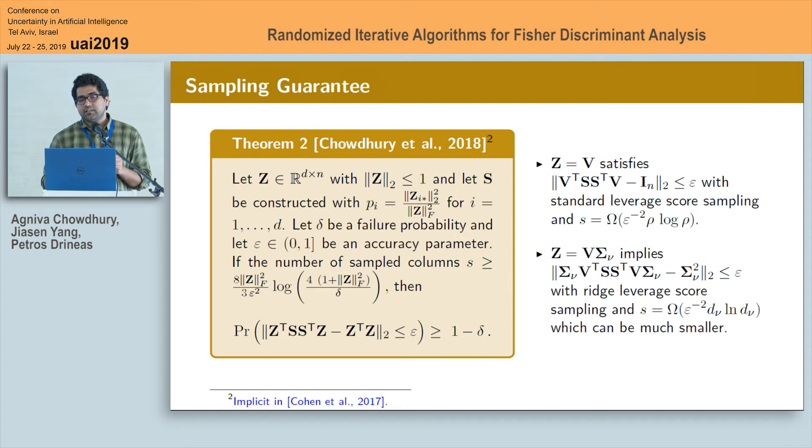In particular if the sampling probabilities are proportional to the column leverage scores of A then it satisfies the first structural condition and the number of samples it required is of order rho log rho and similarly if the sampling probabilities are proportional to the ridge leverage scores of A then it satisfies the second structural condition and the sample size requirements is of order d_nu log d_nu.